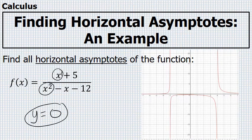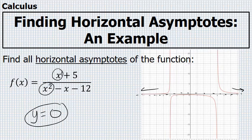The graph of this function looks like this, and you can see that there is a horizontal asymptote, a line that the graph gets closer and closer to as it goes to infinity and negative infinity at y equals 0.